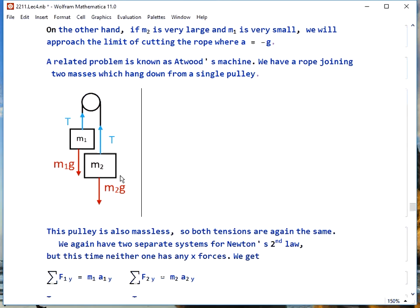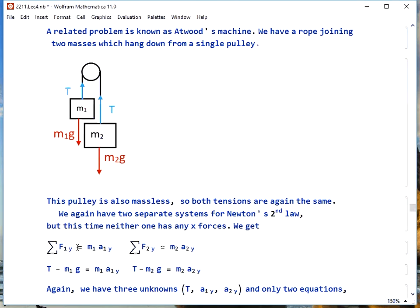We're again going to have two sets of Newton's second law equations, however we don't have any x anywhere on this one. So we just have sum of the forces in the y direction for mass 1 is m1 times a1y, and then the same thing for mass 2. And the expressions look the same.